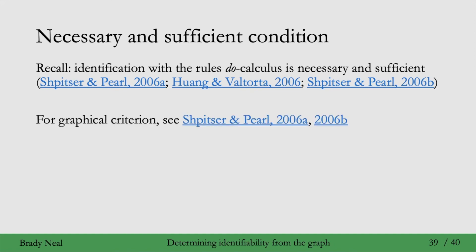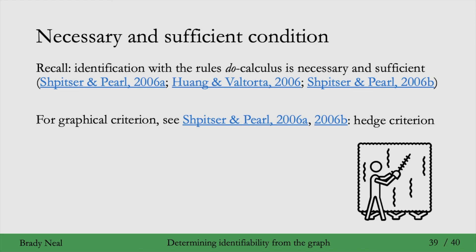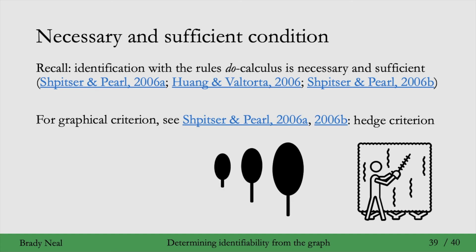For a graphical criterion, see these papers - the first is the main paper, and the second extends it to conditional interventional distributions. The necessary and sufficient graphical criterion is known as the hedge criterion. We won't get into it in this course because it requires defining more complex objects like C-trees and other related structures.